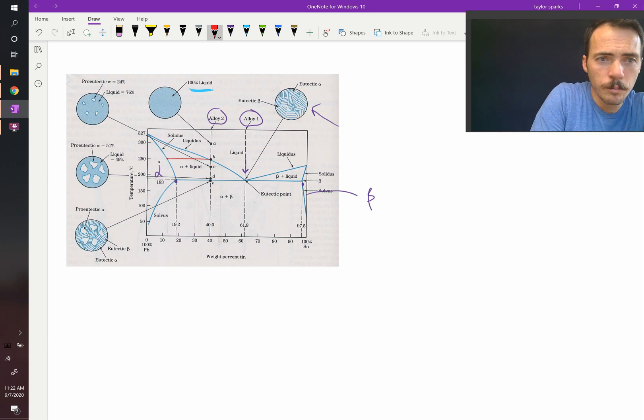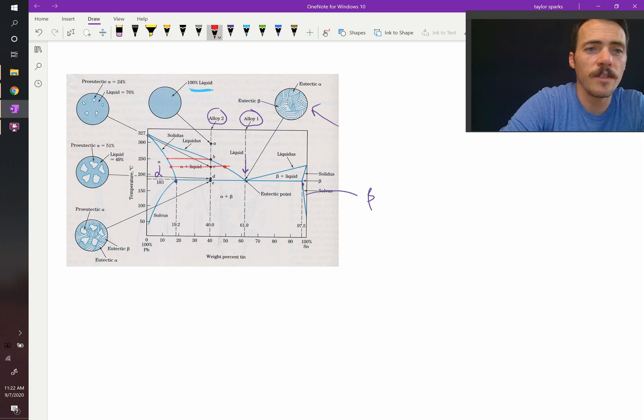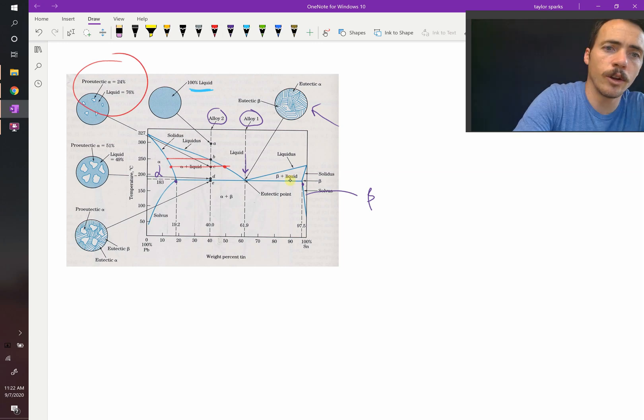And then when you reach point C, the liquid has changed composition. It's at about 50-50. The solid has also changed. It's about maybe, that's about 15. And then they say over here that you have 24% alpha, 76% liquid. How do they know that? Let's do the lever rule and calculate that ourselves and see if that's what we get.